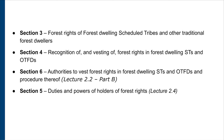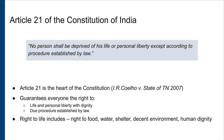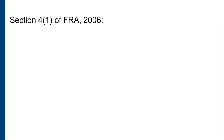Part A looks at Sections 3 and 4 of the Act. Part B of this lecture will look at the rights recognition process under Section 6 of the Act. The connection between the FRA and the substantive right to life and livelihood, as well as the procedural rights emerging from Article 21 of the Constitution, will become apparent in this process. The core substantive provision of the FRA is Section 4.